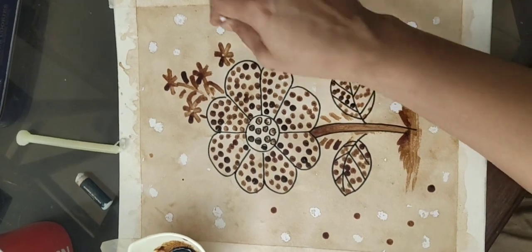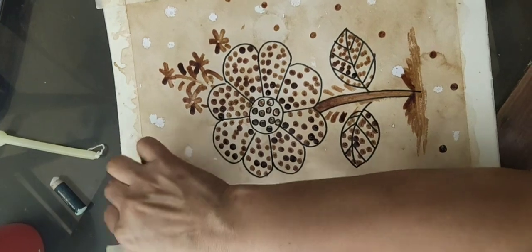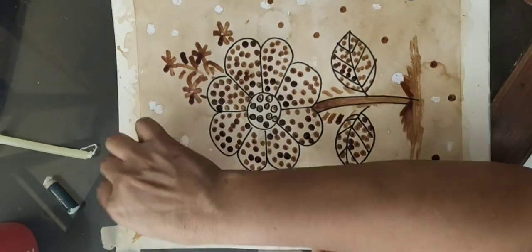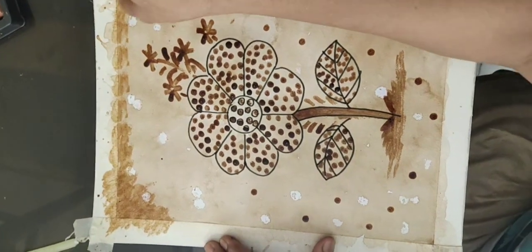I'm applying dots on the sheet for giving different look. And I have coffee in my bowl and I'm just dabbing it on the edges of the sheet.